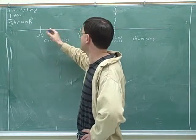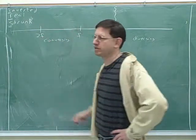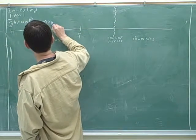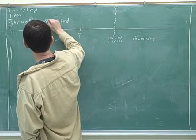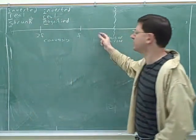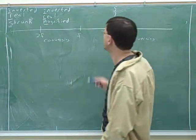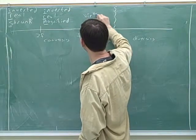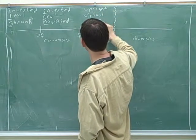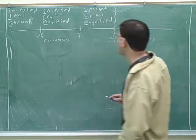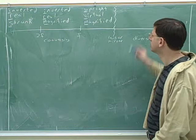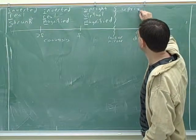Let's make sure we have a table here. If we put the object for a converging device between the focal length and twice the focal length, what are its characteristics? It's magnified, real, and inverted. And what if we put it inside the focal length? Then it's virtual and upright. And what if we have a diverging device — what would be the characteristics of the image? Upright, virtual, and shrunk.